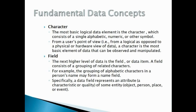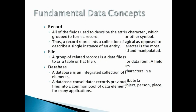The next higher level of data is the field, or data item. A field consists of a grouping of related characters. For example, the grouping of alphabetic characters in a person's name may form a name field. A data field represents an attribute of some entity, where an attribute is a characteristic and an entity is some object, person, place, or event.